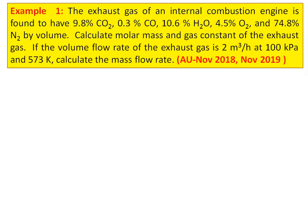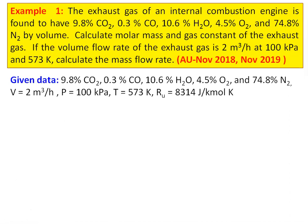The exhaust gas of an internal combustion engine is found to have 9.8% CO2, 0.3% CO, 10.6% water vapour, 4.5% oxygen and 74.8% nitrogen by volume. Calculate the molar mass and gas constant of the exhaust gas. If the volume flow rate of the exhaust gas is 2 m³/hr at 100 kPa pressure and 573 K temperature, calculate the mass flow rate. The given data: CO2 = 9.8%, CO = 0.3%, H2O = 10.6%, O2 = 4.5%, N2 = 74.8%, volume = 2 m³/hr, pressure = 100 kPa, temperature = 573 K.